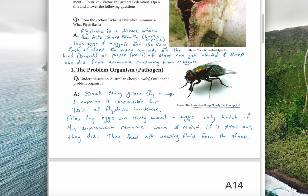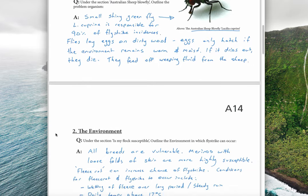Lucilia cuprina is a small, shiny green fly responsible for 90% of fly strike incidences in Australia. The flies lay eggs on dirty wool. The eggs hatch if the environment remains warm and moist — if it dries out, they die. So we need to help control it by making sure the environment is not warm and moist. The flies feed off weeping fluid from the sheep.